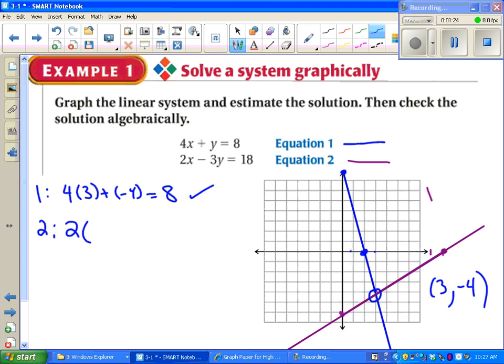Equation 2, we plug in 3 and negative 4 also. That should equal 18. 6 plus 12 is 18, so it works out. So we just solved the system graphically and checked it algebraically.